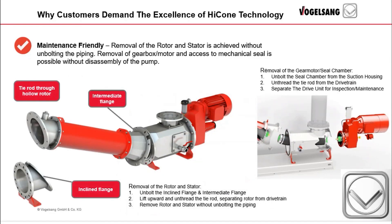Maintenance friendliness. After the rotor and stator have demonstrated to be completely worn, you replace both at the same time. This removal consists of three steps. First, unfasten the bolts located at both the incline flange and the intermediate flange, and lift upward on the incline flange. From there, you will see the retention nut. Second, unthread the retention nut that is connected to the tie rod, connecting the entire works to the internal tie rod inside of the drivetrain. Third, lift away the rotor and stator. The removal of the gearbox and motor from the pump is just as easy and provides access to the mechanical seal.